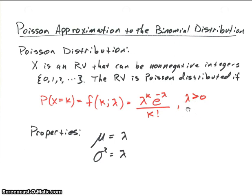And the stipulation is that lambda must be greater than 0. It can't be 0 or a negative value. Now, interesting properties for this distribution function are that the mean of the distribution, or mean of the random variable, is equal to lambda. And also the variance, sigma squared, is also equal to lambda.